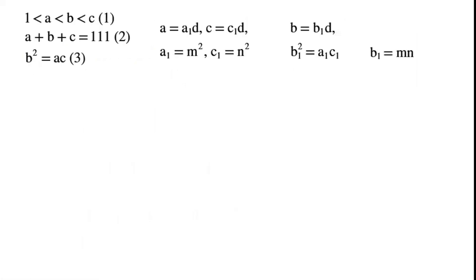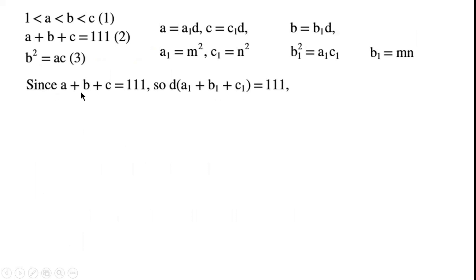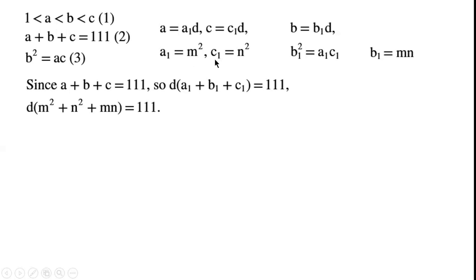Since the sum of A, B, C equals 111, and A equals A1·D, B equals B1·D, C equals C1·D, we can write D times the sum of A1, B1, C1 equals 111. We know A1 equals M squared, C1 equals N squared, B1 equals M times N, so we can write D times (M squared plus N squared plus M·N) equals 111.